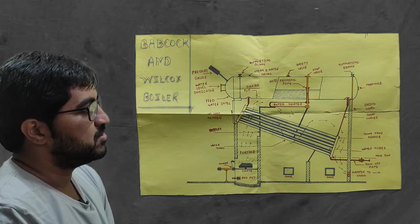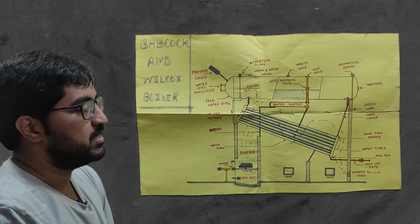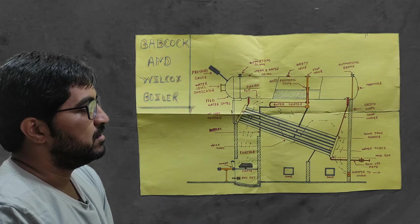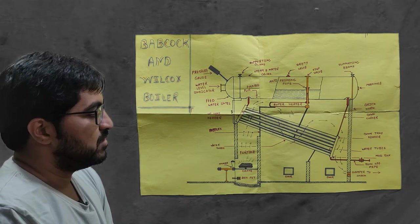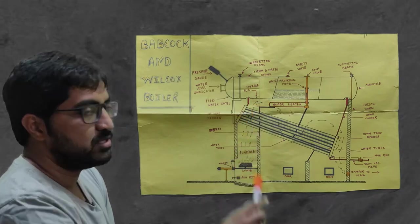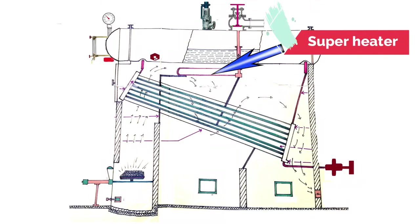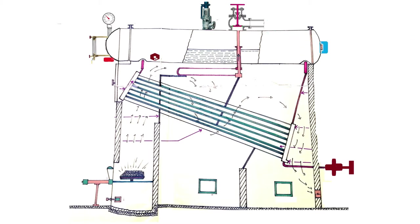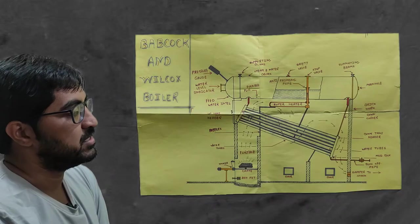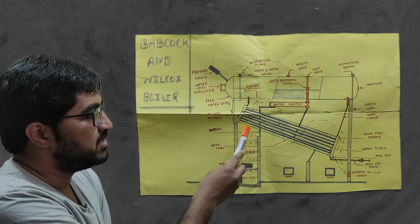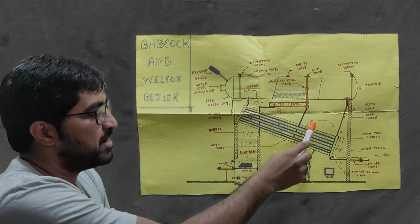To generate sine wave type flow of the flue gases for better heat transfer, we use baffles. First the gases pass through the superheater. The superheater is used to generate superheated steam, which is supplied to the turbine as well as used in some industrial processes. The hot flue gases first pass through the superheater, then through the bundle of tubes.